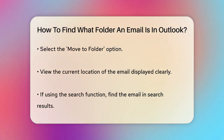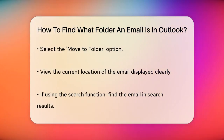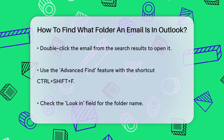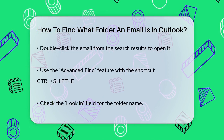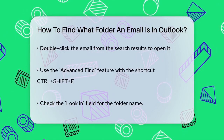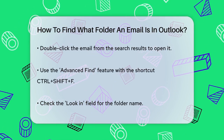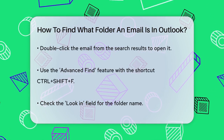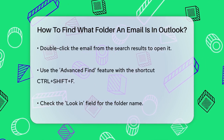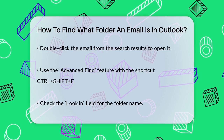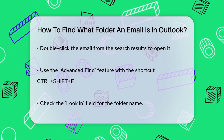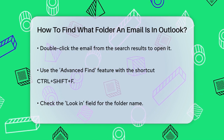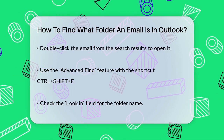If you're using the search function and need to find the folder of an email from the search results, there's a slightly different approach. After you've found the email in the search results, double-click on it to open it in its own window. Then use the Advanced Find feature by pressing the keyboard shortcut Ctrl+Shift+F. In the Look-In field, you'll see the folder name, and clicking on the Browse button will show you the exact location in your folder hierarchy.